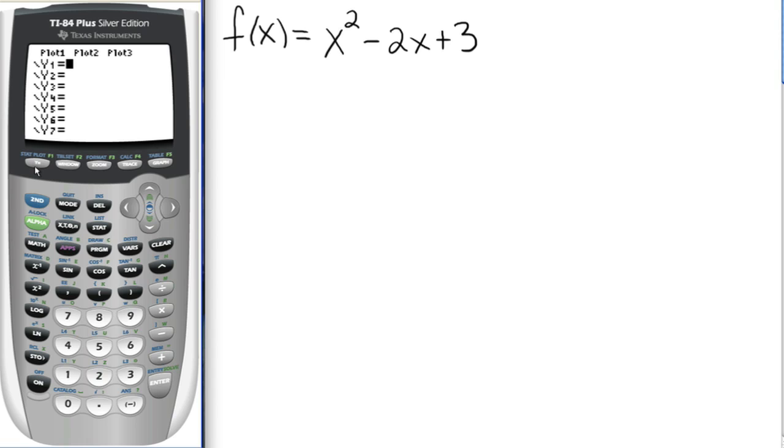Then enter in x squared, so here's the x key, x, and then squared, and then minus 2x plus 3. So you enter that in, and then graph it.